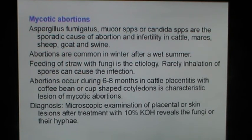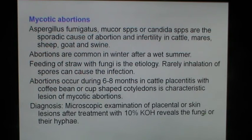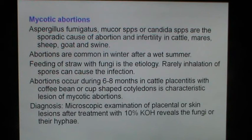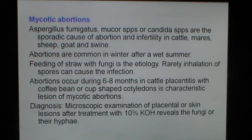Mycotic abortions: Aspergillus fumigatus, Mucor species or Candida species are sporadic causes of abortion and infertility in cattle and other animals like mares, sheep, goat and swine. Abortions are common in winter after a wet summer. Feeding of straw with fungi is the etiology. Rarely, inhalation of spores can cause infection. Abortions occur during six to eight months in cattle. Placentitis with coffee bean or cup-shaped cotyledons is a characteristic lesion of mycotic abortions. Microscopic examination of placental or skin lesions after treatment with 10% KOH reveals the fungi and their hyphae.